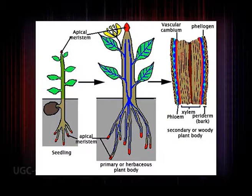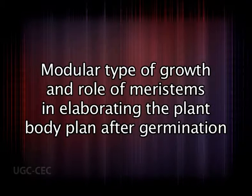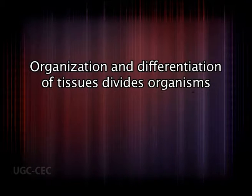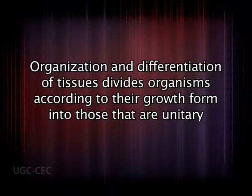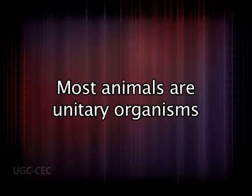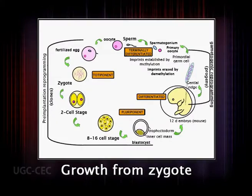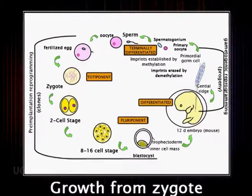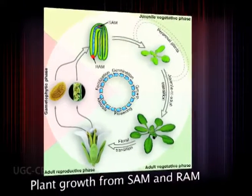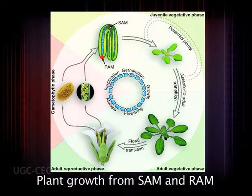Regarding modular type of growth and the role of meristems in elaborating the plant body plan: after germination, a major distinction among species of both plants and animals lies in the organization and differentiation of tissues. This fundamental distinction divides organisms into those that are unitary and those that are modular. Most animals are unitary organisms — development from the zygote through the adult involves an irreversible process of growth and tissue differentiation leading to organ development according to a highly regulated program.